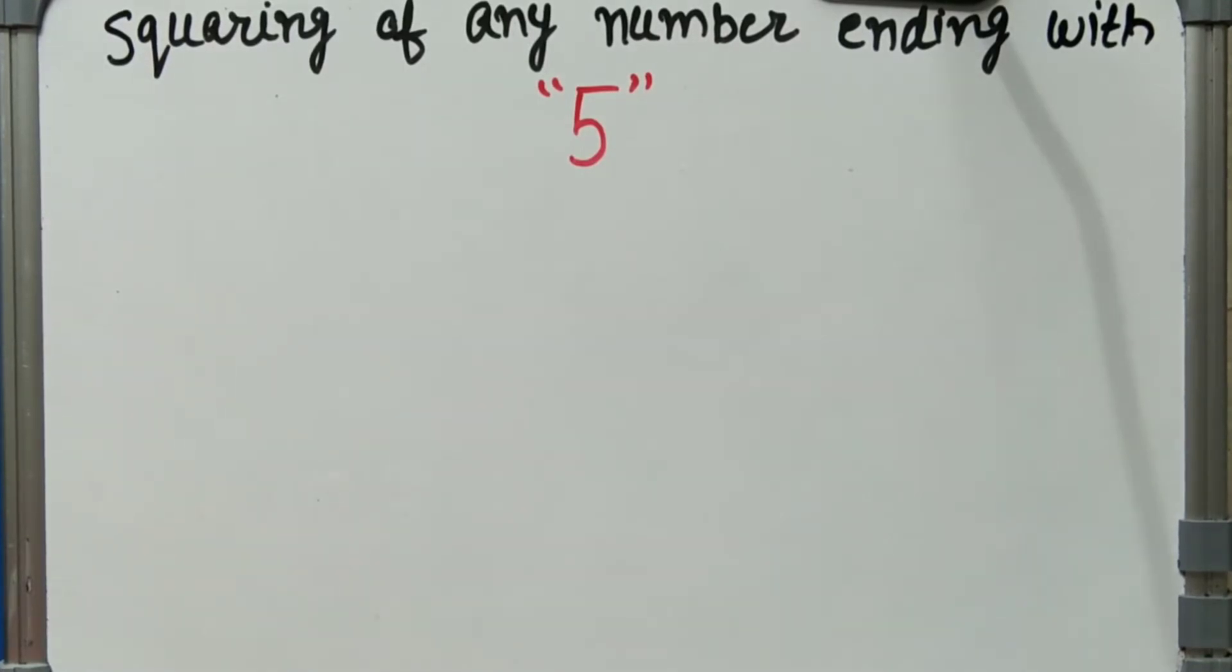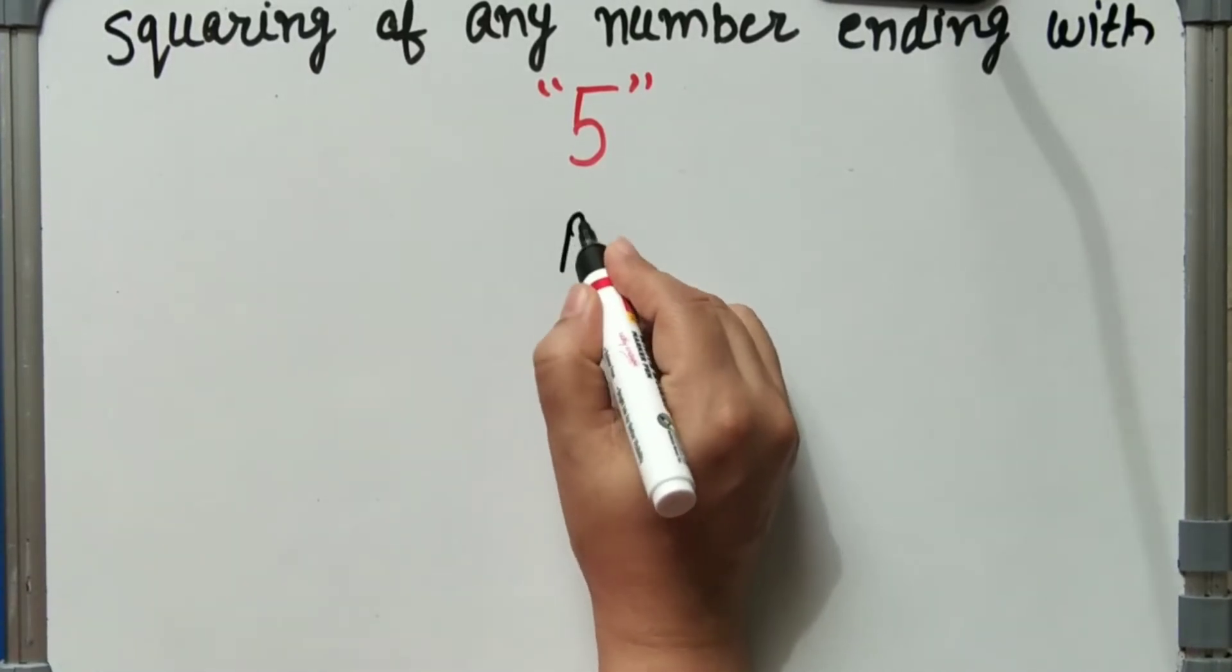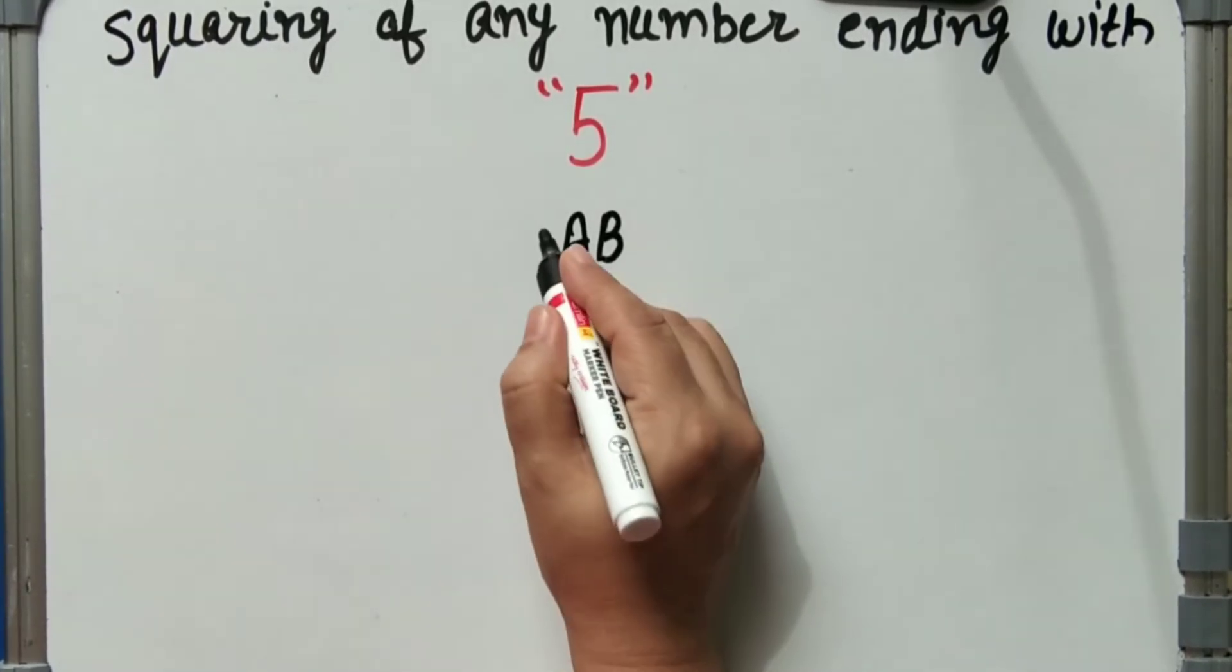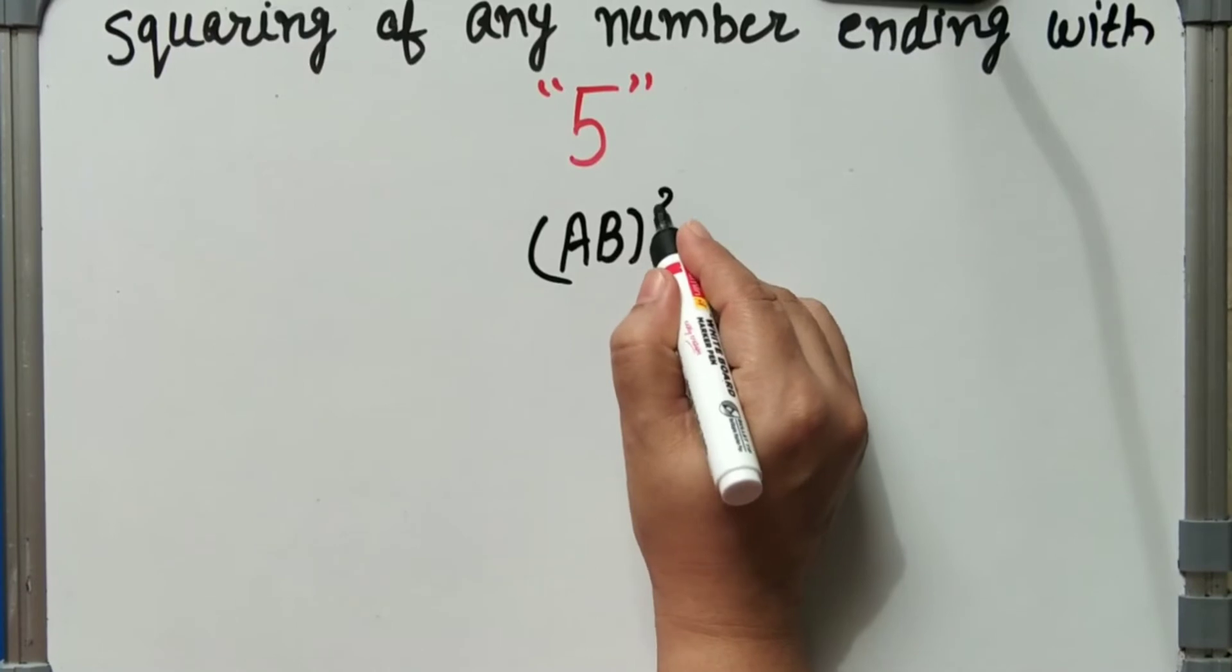Here we will attempt this within one step. Firstly, I will tell you the formula how to do it. Let us suppose that we have two numbers, let A and B, and we have to do squaring.